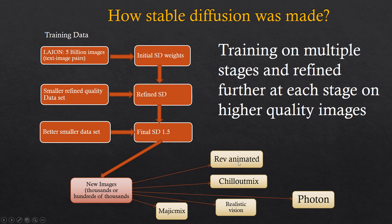What we see on sites like Civit.ai, for example, are different models or checkpoints. They are all based on Stable Diffusion 1.5 or 2, etc. What they do is that they actually train the Stable Diffusion model on further new images and produce custom models based on the weights that have been trained already. Training Stable Diffusion could cost hundreds of thousands of dollars or more, or millions. So these smaller models rely on the weights that exist already in Stable Diffusion and the new images.